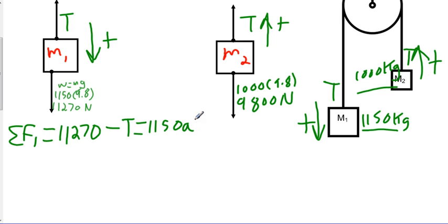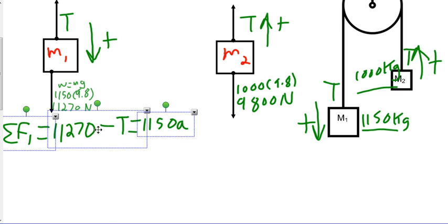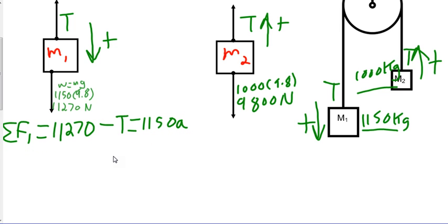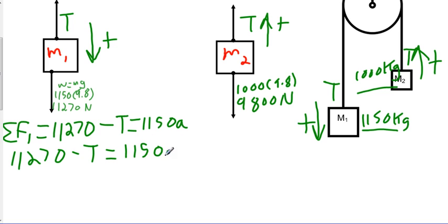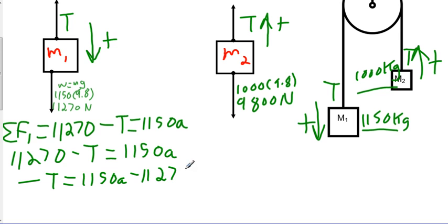That's our first equation. Simplifying: 11,270 minus T equals 1,150 A. Moving 11,270 to the other side gives negative T equals 1,150A minus 11,270. Multiplying everything by negative one: T equals negative 1,150A plus 11,270. That is our first equation for this problem.